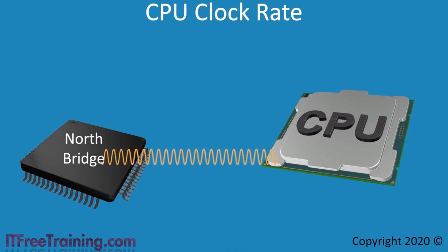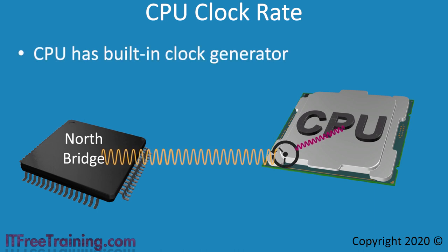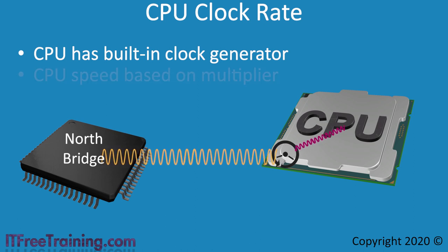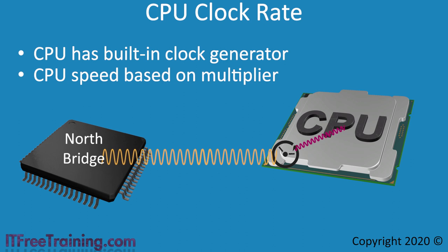This clock rate will be the speed of the front side bus. Once the clock rate reaches the CPU, a clock generator in the CPU will generate its own clock rate. This clock rate is based on a multiplier. The multiplier will be configured in the BIOS. Most BIOS will automatically detect the multiplier, but you can change it if you wish.